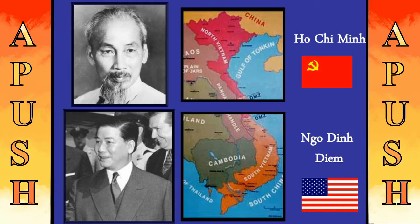Underneath the Eisenhower presidency, we're going to see the Korean armistice come into effect. Though Truman was essentially the commander on deck for that escapade, he's going to be gone by the time that everything's wrapped up and finalized. Eisenhower is going to see some other issues here inside of Asia, such as the fall of Indochina.